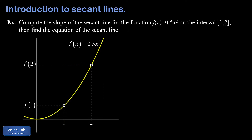Now we can work a quick example of finding the slope of a secant line on a specific function, and we'll extend this to finding the equation of that secant line in slope-intercept form. The slope of the secant line is f of b minus f of a in the numerator. In this case, b is 2 and a is 1, so we have f of 2 minus f of 1.